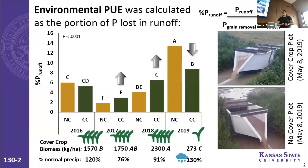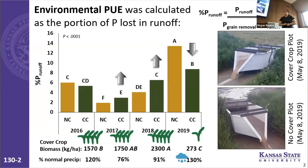Things get more interesting when we talk about phosphorus use efficiency from an environmental perspective. We're looking at environmental phosphorus use efficiency as the portion of phosphorus leaving in runoff — calculated as the amount of phosphorus in runoff divided by the total amount of phosphorus leaving the system in a given year. That's the phosphorus lost in runoff plus the phosphorus utilized agronomically and exported in grain at harvest, expressed as a percentage.